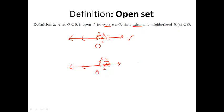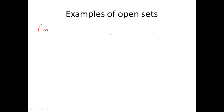So I'd have to take a smaller size of epsilon to work. Let's get some examples of open sets. The prototypical example, of course, is one we're familiar with: the open interval. An open interval from a to b is open.